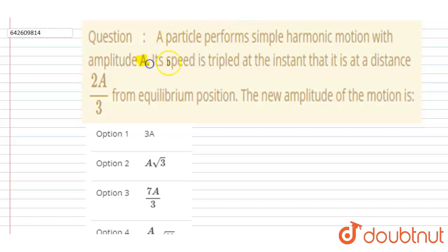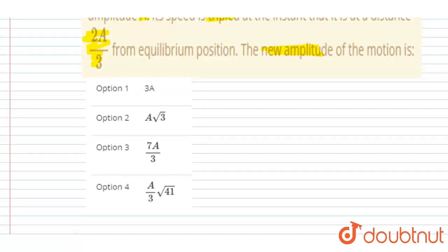Hello everyone. A particle performs SHM with amplitude A. If the speed is tripled at the instant when the particle is at a distance of 2A/3 from the equilibrium, the new amplitude of the motion is what? It is given that when the particle is at a distance of 2A/3 from the equilibrium position, its velocity is tripled.